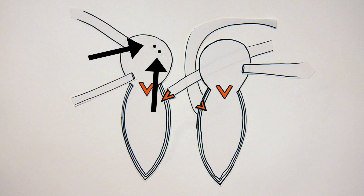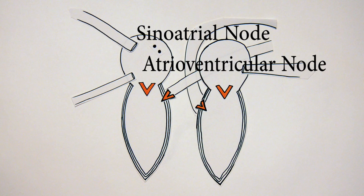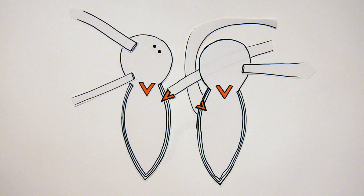Now speaking of the two nodes located on the right atrium — one being called the sinoatrial node or SA node, and the other being called the atrioventricular node or AV node — they help control the heart rate, which is the contraction of the four chambers allowing blood flow to go in and out through the heart to the lungs and then to the rest of the body.